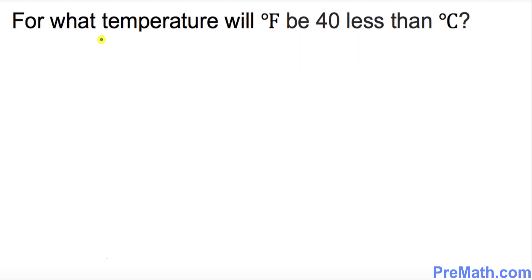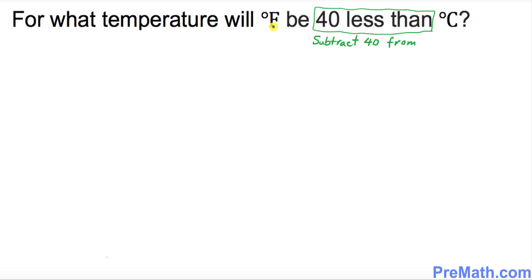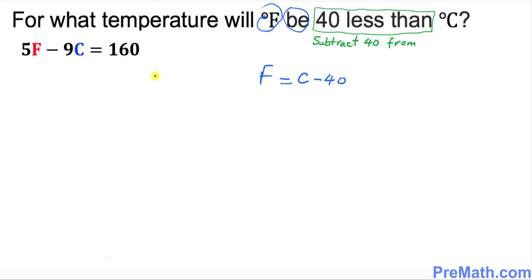Let's start working on the next temperature word problem. We need to convert this one to an algebraic problem as well. It says: for what temperature will degrees Fahrenheit be 40 less than degrees Celsius? Always remember: '40 less than' means subtract 40 from. So we put down F, and since F is the same as 40 less than C, it's going to be C minus 40. Always remember: C minus 40.